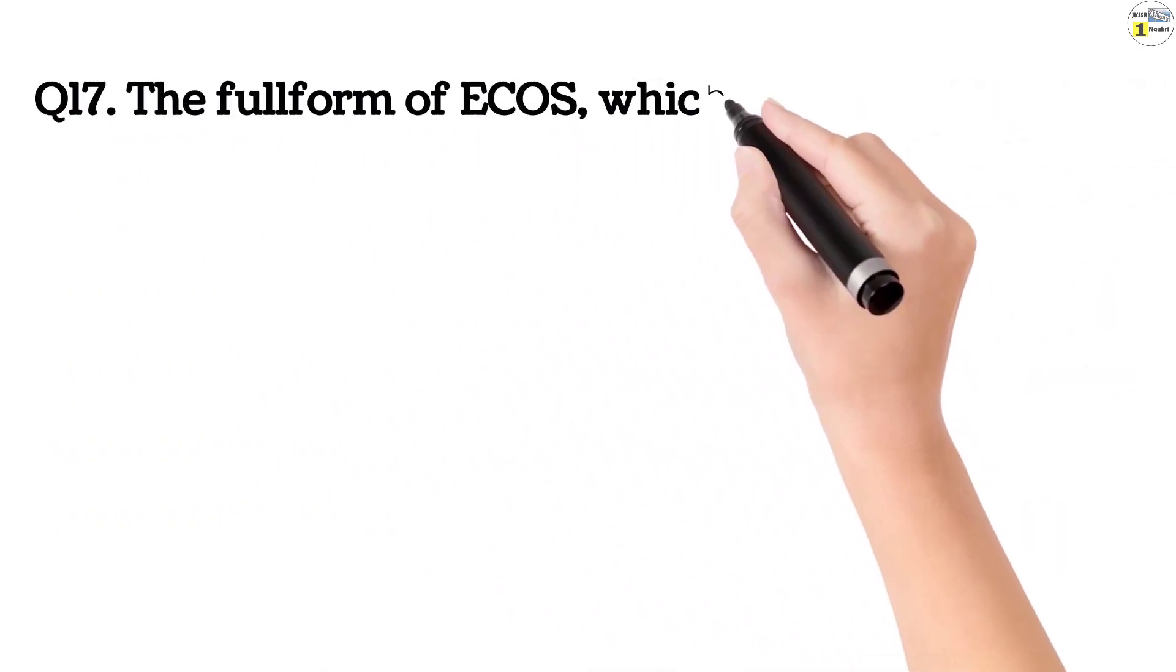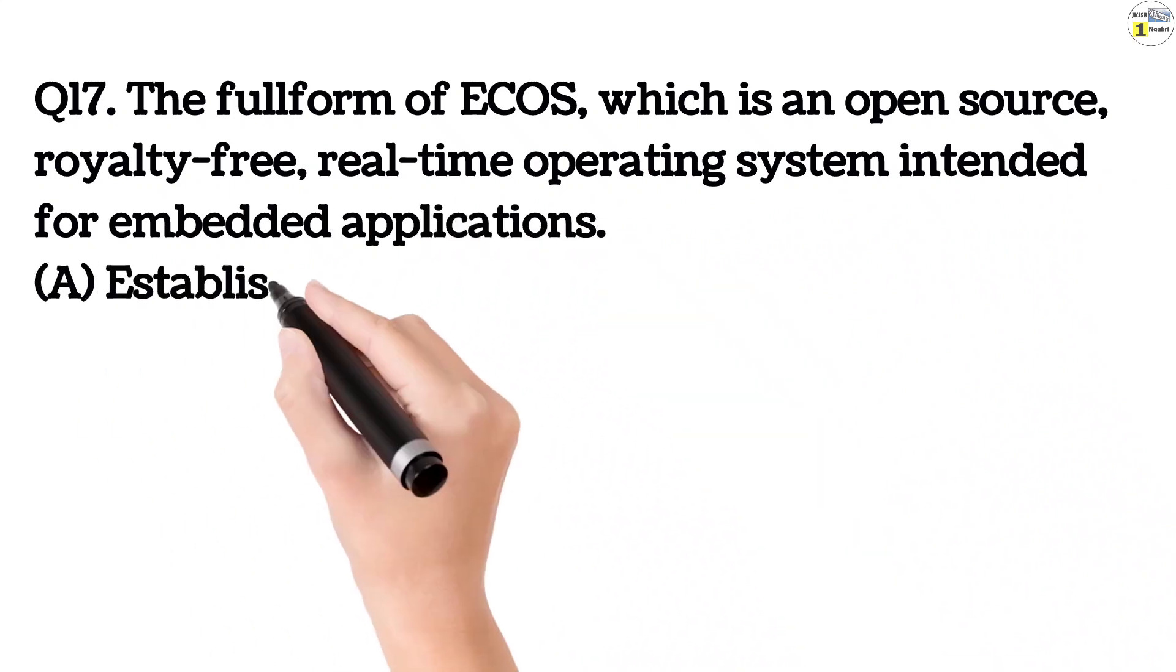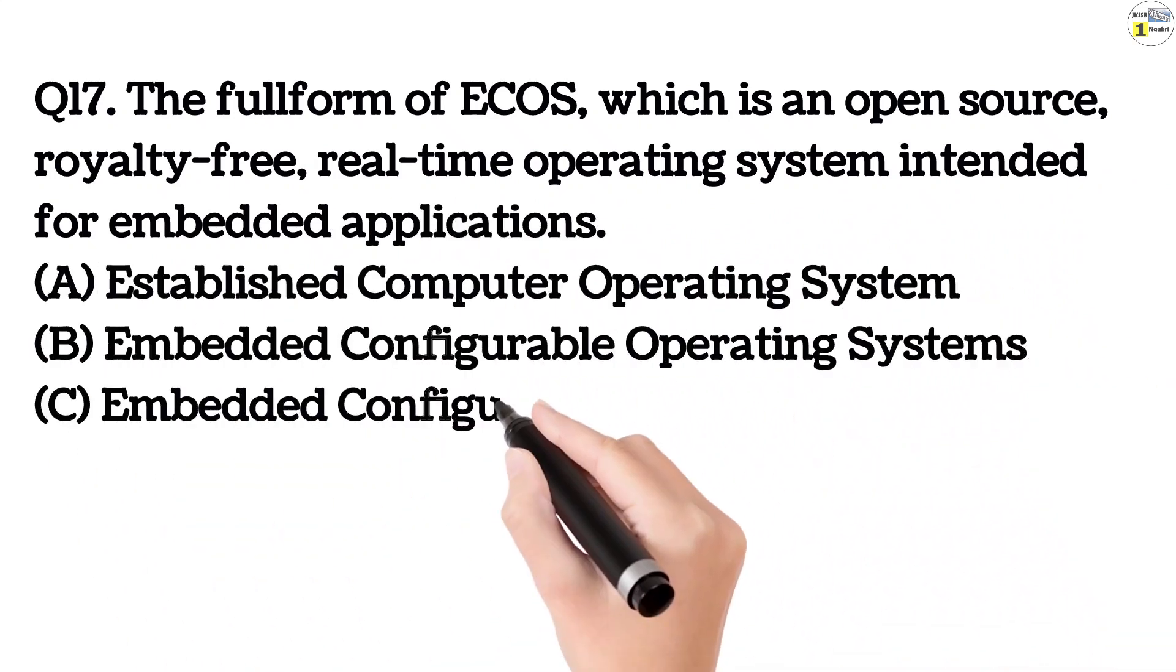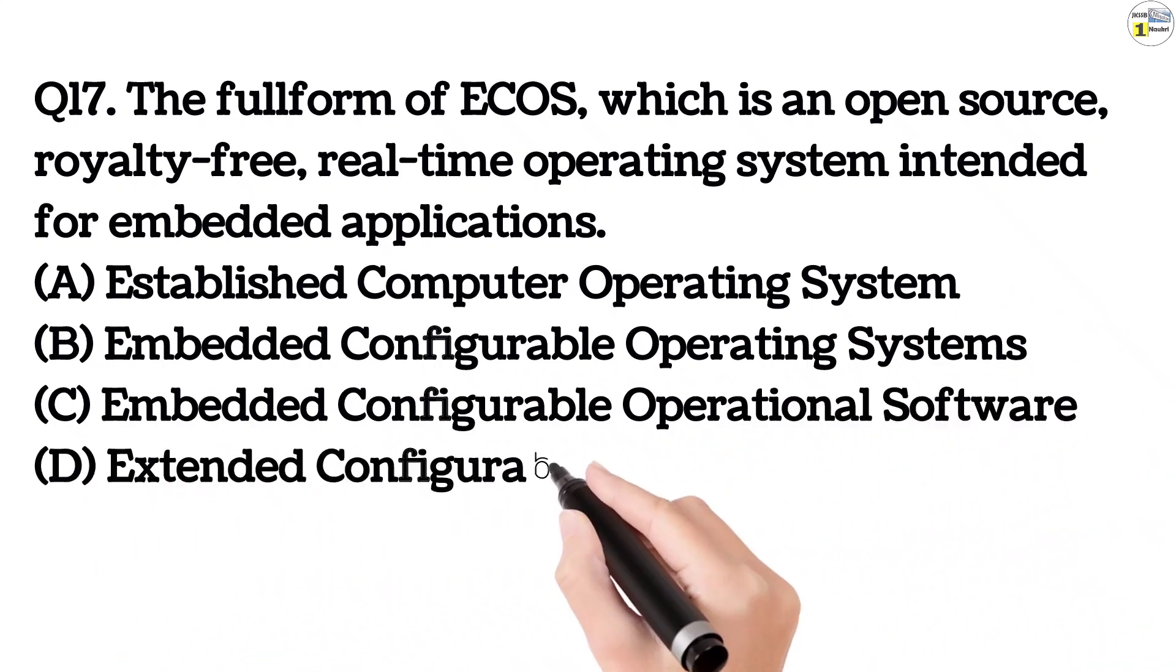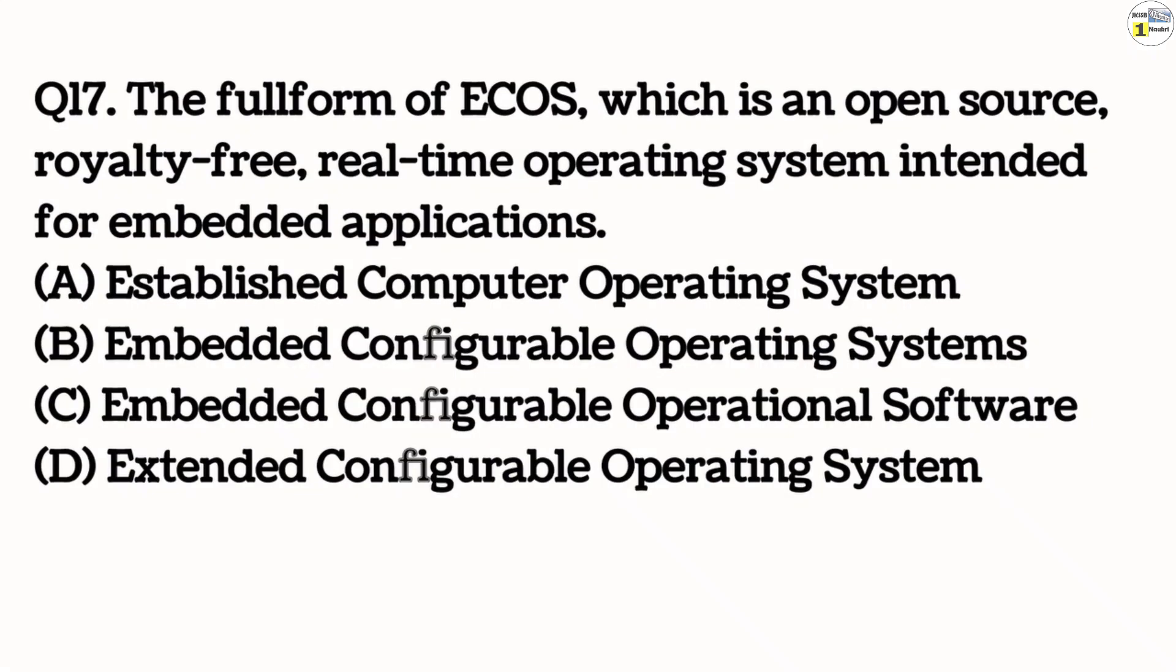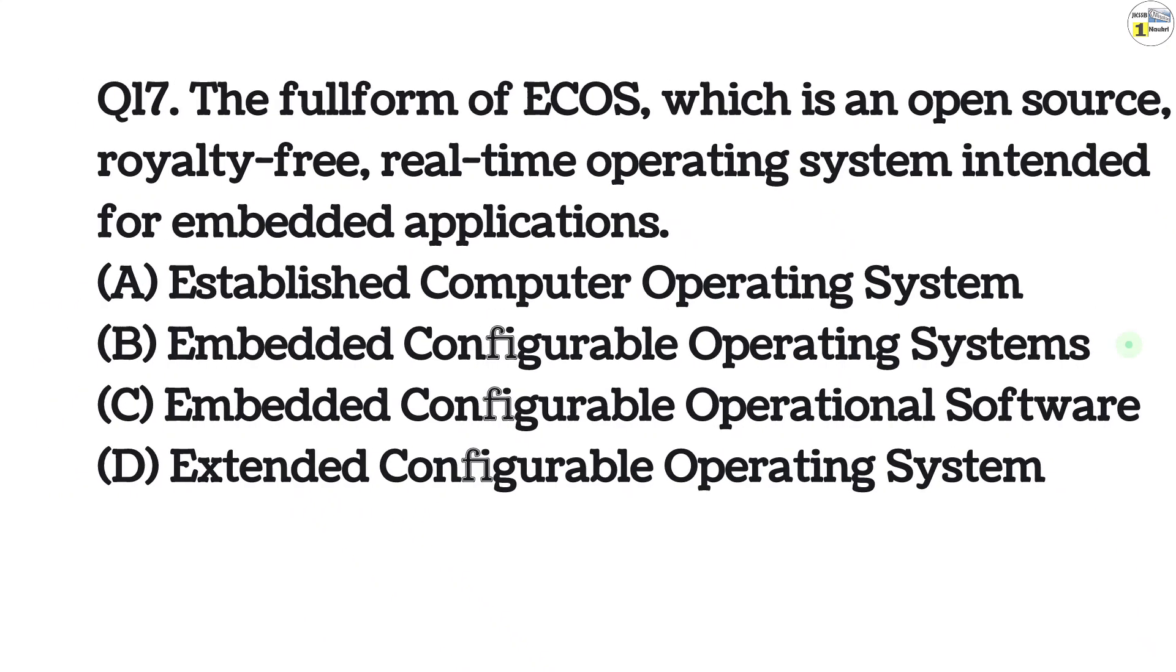Question number 17. The full form of ECOS, which is an open source royalty free real-time operating system intended for embedded applications. Option A, established computer operating systems. Option B, embedded configurable operating systems. Option C, embedded configurable operational software. Option D, extended configurable operating system. This answer is option B, embedded configurable operating systems.